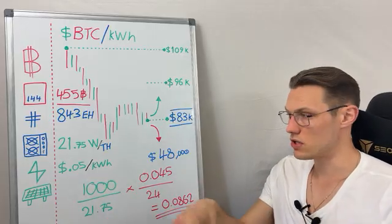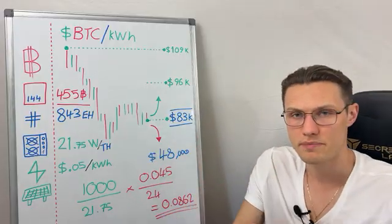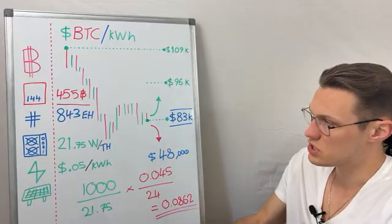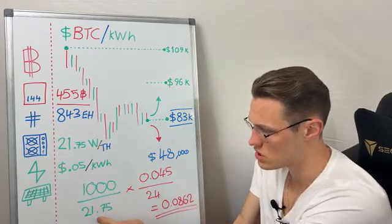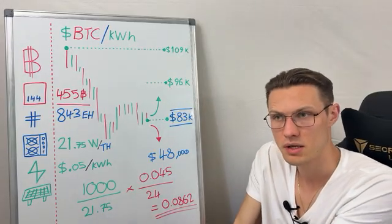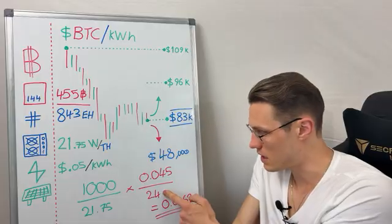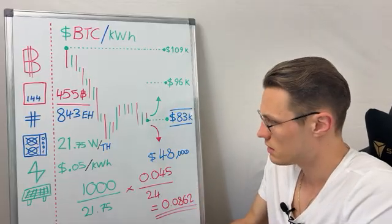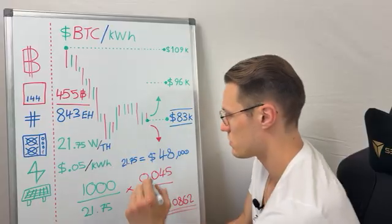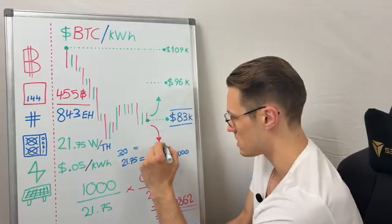If the price on the grid is 6, 7, or 8 cents, miners would switch machines off at different rates depending on their machine efficiency. If you're using a 30 joule per terahash machine it's using more energy — you do 1,000 divided by 30, earning less hash rate per 5-cent kilowatt hour. With the same network revenue and same 24-hour day: at 21.75 J/TH the production cost equals $48,000, and at 30 J/TH it's about $66,000 per Bitcoin.